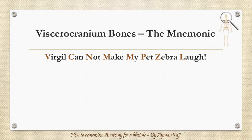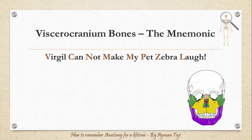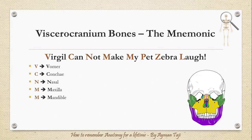To remember them, just remember that 'Virgil cannot make my bed zebra laugh.' So: V for vomer, C for conchi, N for nasal, M for maxilla and mandible, B for palatine, Z for zygomatic, and L for lacrimal. Now it's so much easier and faster to remember all of them in less than a minute.